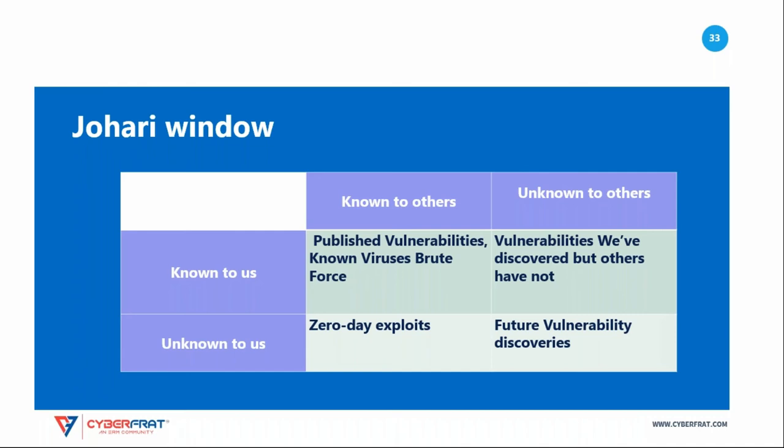Then there are known unknowns. These are threats that are known to us but not known to others. For example, we might have discovered a security vulnerability in our infrastructure that is not detectable from the outside and attackers are not yet aware of.